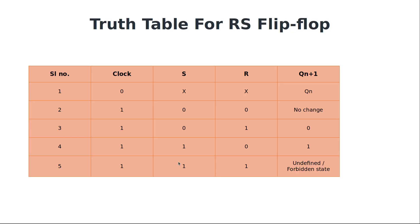This is the truth table of the R-S flip-flop. If the clock value is equal to 0, it will not work. If both S and R are 0, there is no change. If both are 1, it is an undefined or forbidden state. If S is equal to 0 and R is equal to 1, it is called a reset state. If S is equal to 1 and R is equal to 0, it is called a set state. The final output is 0 and 1 respectively.